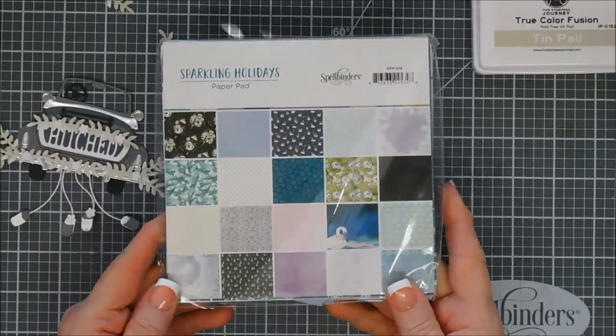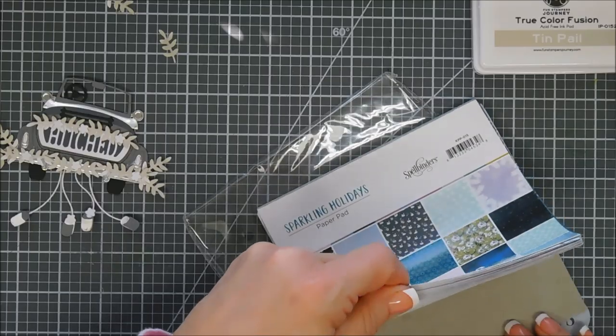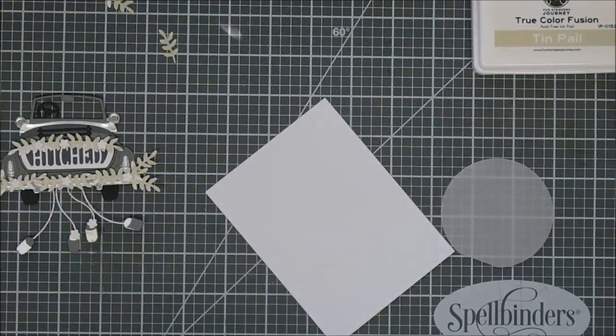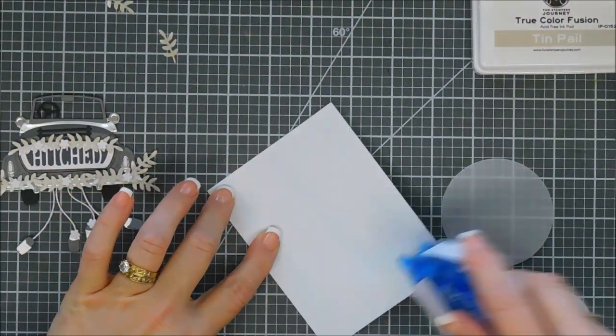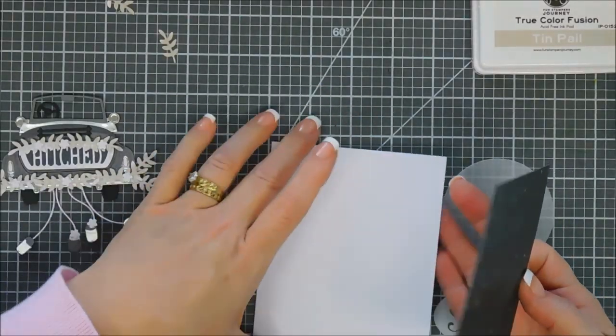Okay, we're going to bring in a paper pad, it's called Sparkling Holidays. There is a pattern paper in here that looks like a night sky with lots of stars in it. So I trimmed down a panel that's three and three quarter inches by five inches. We're going to go ahead and adhere that to a standard A2 size card base.